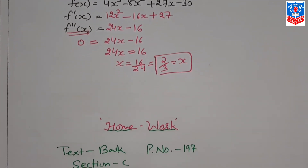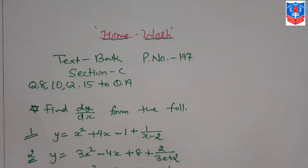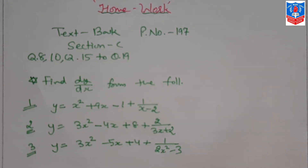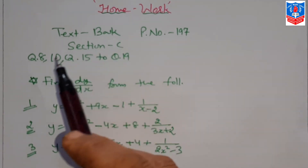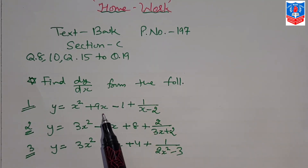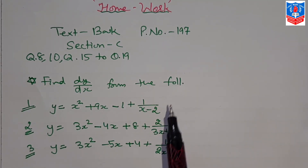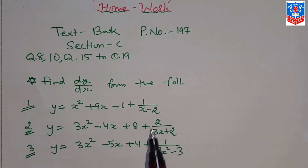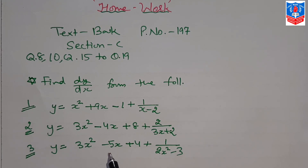Today's homework: Textbook page number 197, Section C, question number 8, 10, and questions 15 to 19. Also, the three questions of the equation form given — try to solve all those sums. This is the end of today's session. See you in the next session. Thank you.